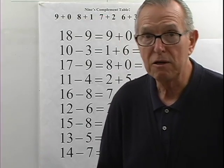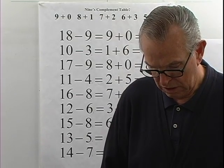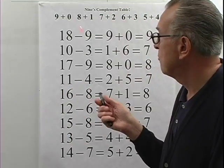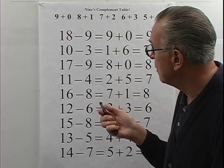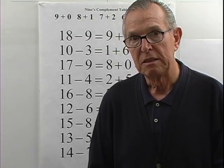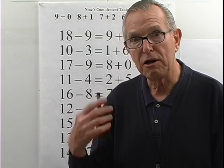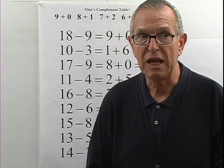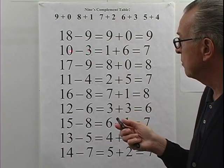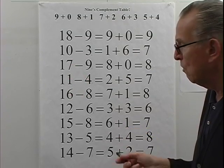Before trying the algorithm on other problems, I want to define certain things. In every problem we will do, the subtrahend digit is greater than the corresponding minuend digit. In subtraction by subtraction that would require borrowing. In our algorithm — subtraction by addition — there will be none of that. For example: three is greater than zero, nine is greater than seven, four is greater than one, eight is greater than six, and so on.